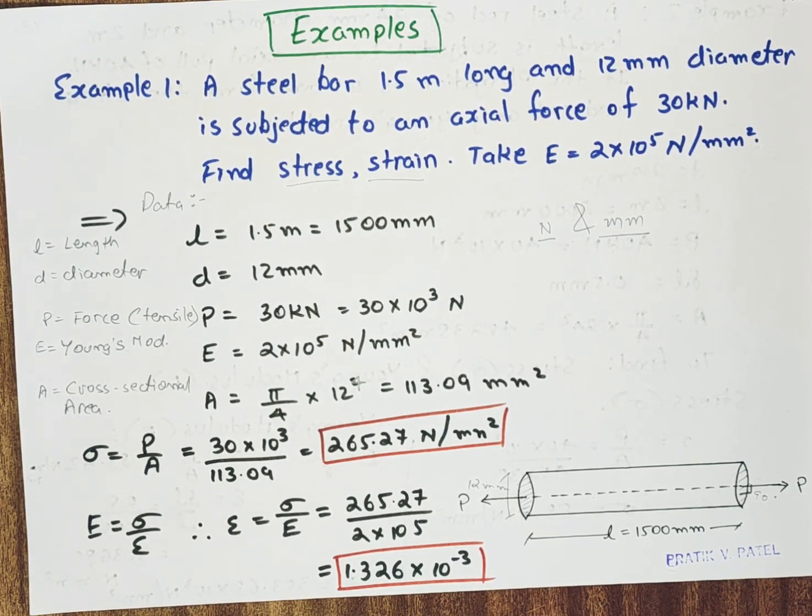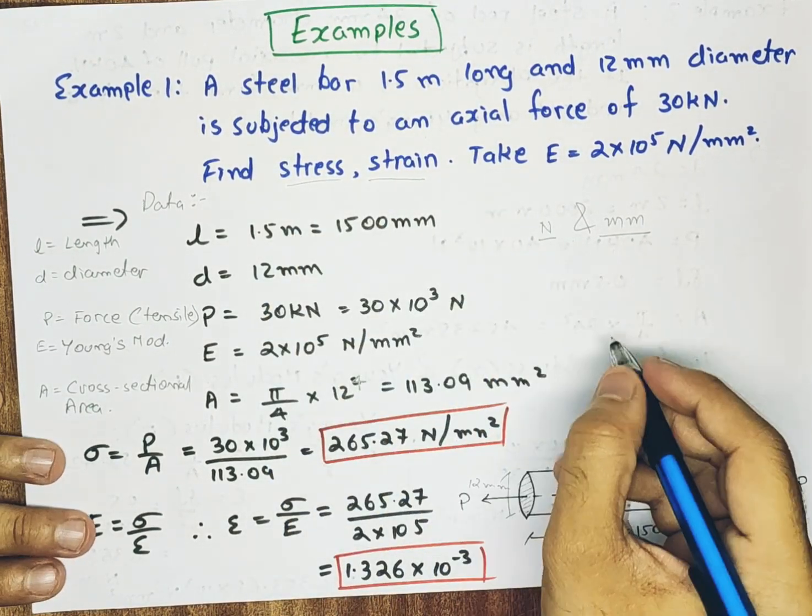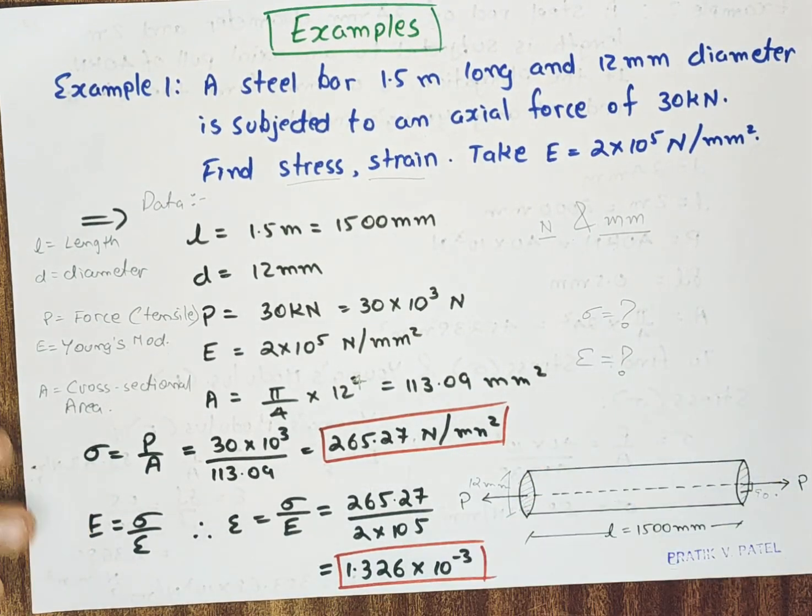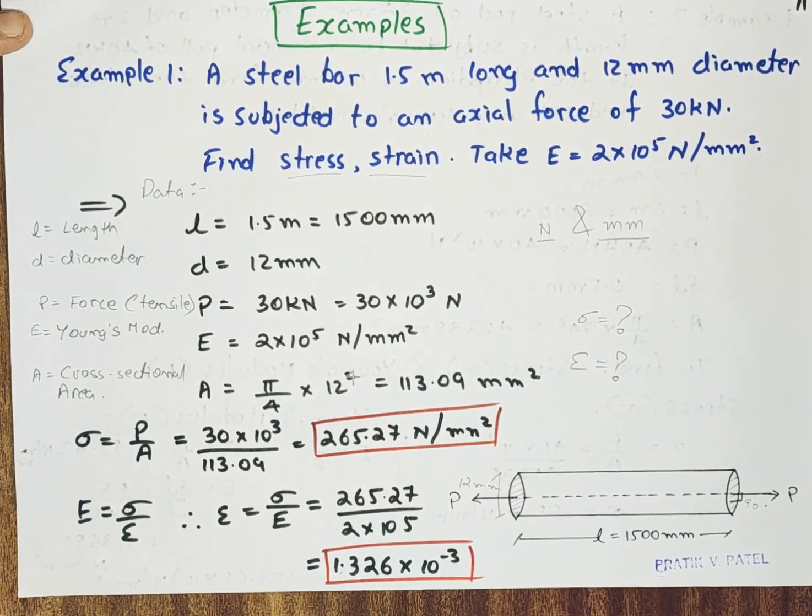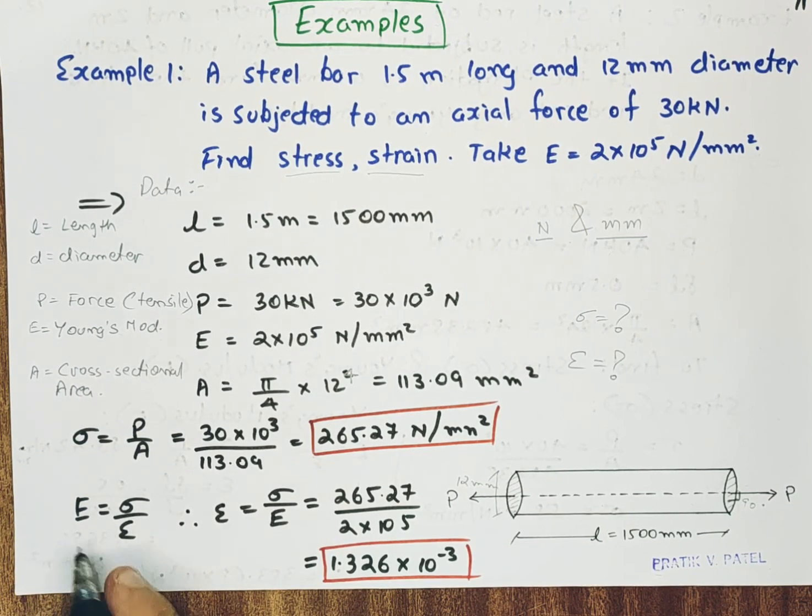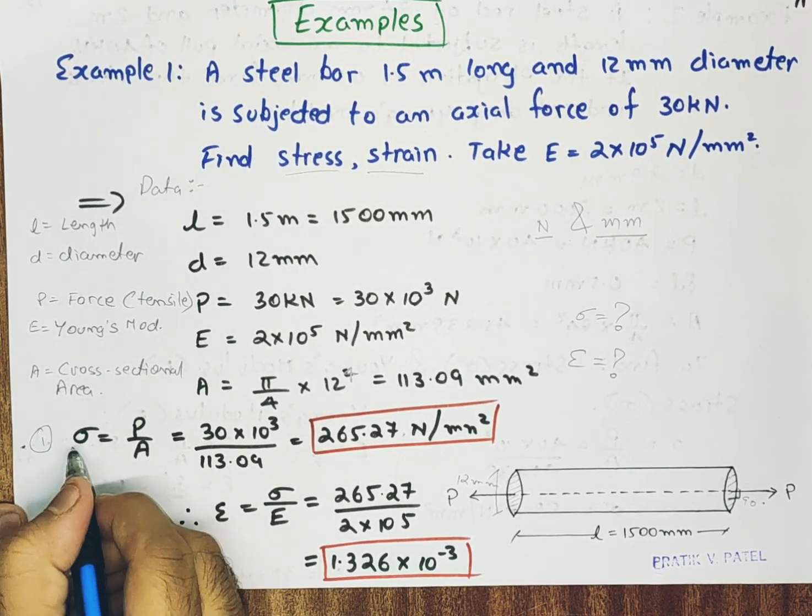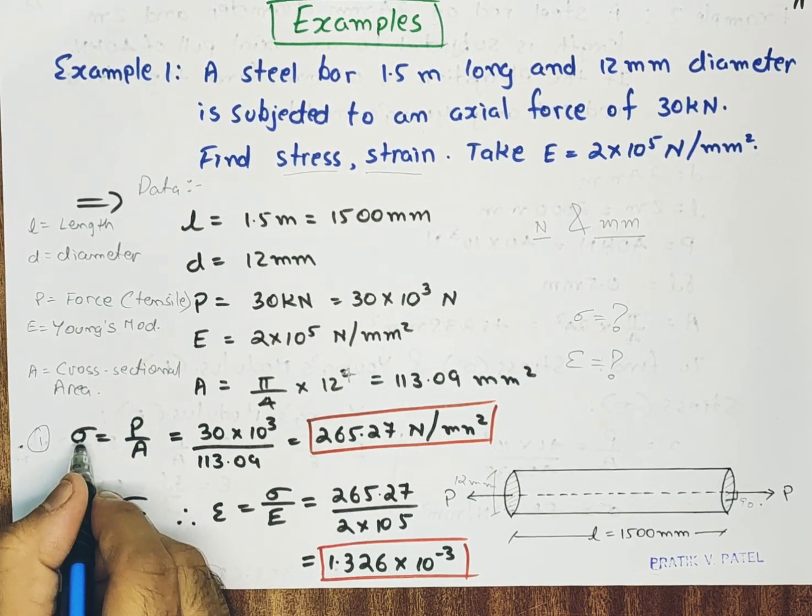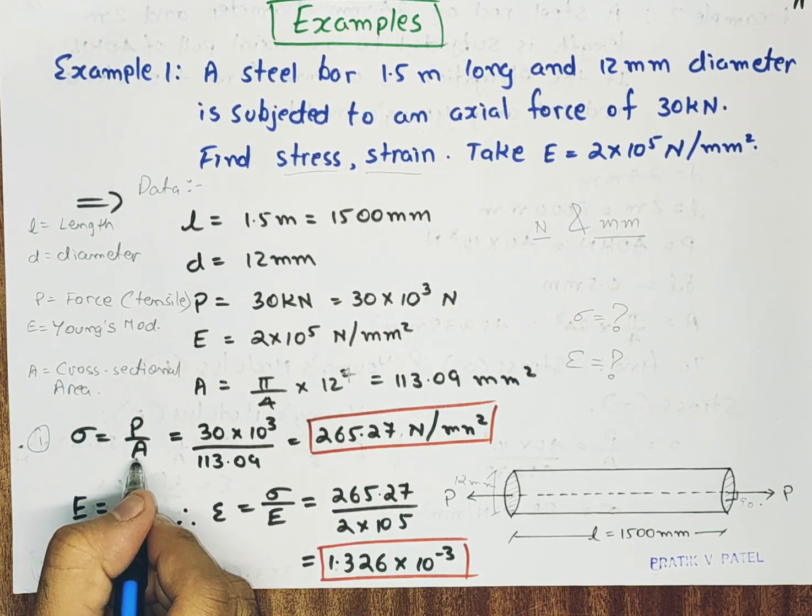Now what we need to find is stress, that is sigma, and strain, that is epsilon. These two things we need to find. So this is our data. First formula of sigma is sigma equal to P by A. Stress is equal to force upon cross sectional area.